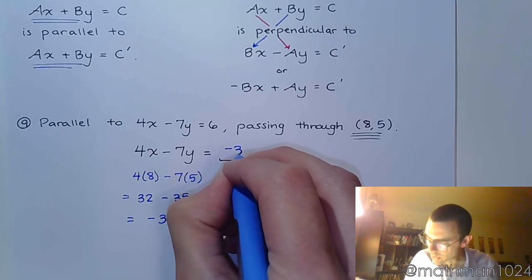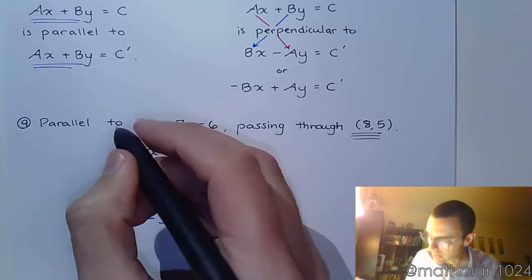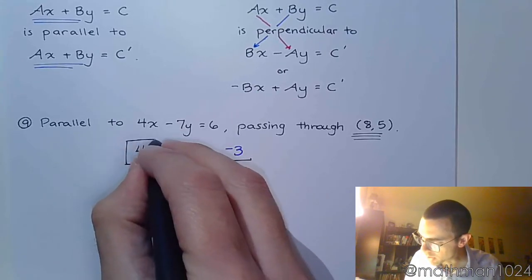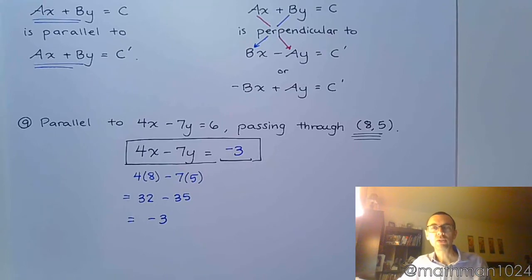So that's the number that goes here. It has nothing to do with the 6. Again, the 6 is trash. So by plugging in that ordered pair, it forces what that constant is on the right side. Isn't that a thing of beauty?